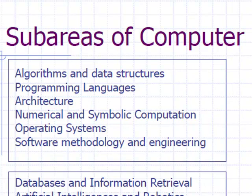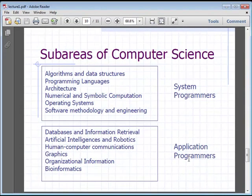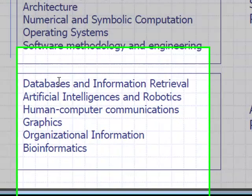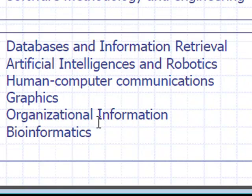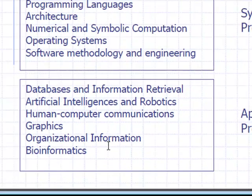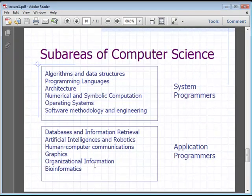Now the application programmers — their job is to deal with databases, information retrieval, artificial intelligence, robots, human-computer communications, graphics, organizational information, and bioinformatics. This list can really go on and on, but these are just examples of some things that application programmers would do.